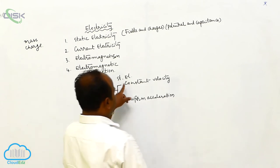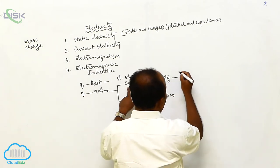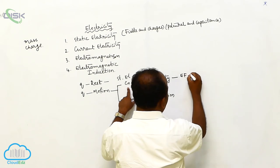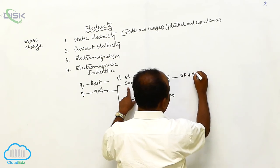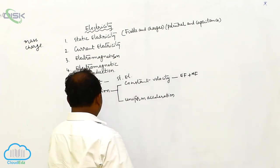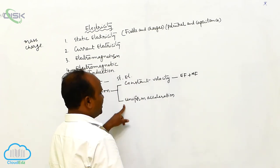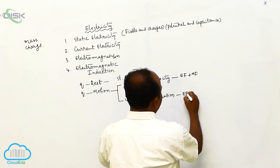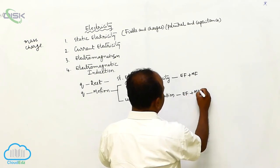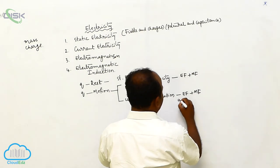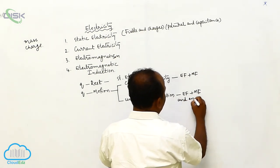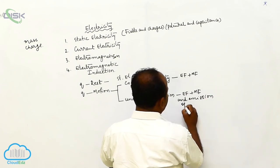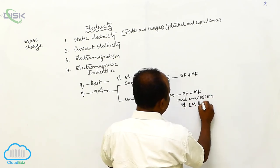If the charge moves with a constant velocity, around the moving charge there is an electric field plus a magnetic field. Whenever the charge is under motion with a uniform acceleration, there is an electric field, plus a magnetic field, and emission of electromagnetic radiation.